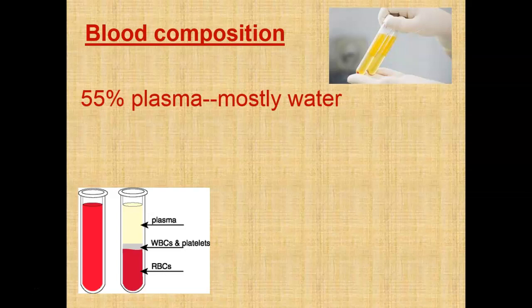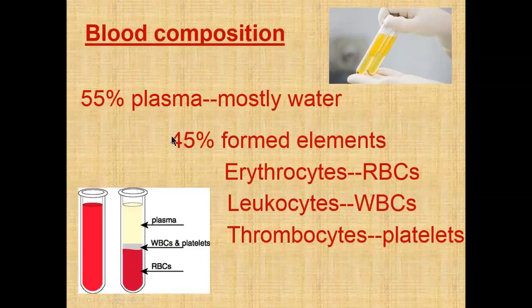The main components of blood are what we're going to focus on in this discussion. About 55% is the plasma — the liquid portion of the blood, these tubes filled with plasma, which is mostly water.